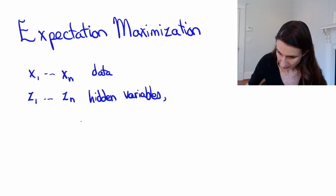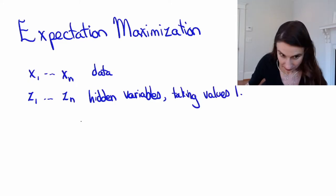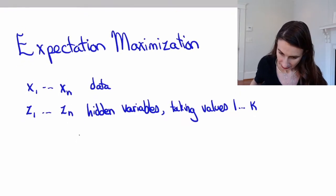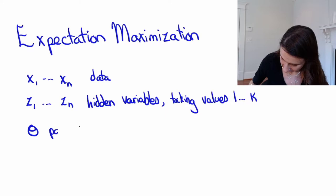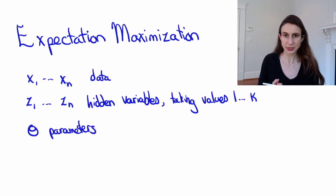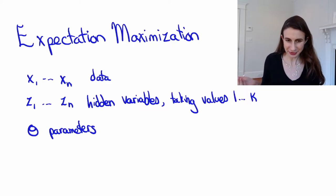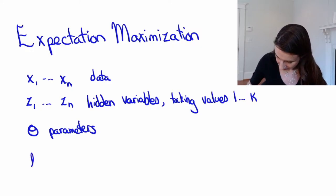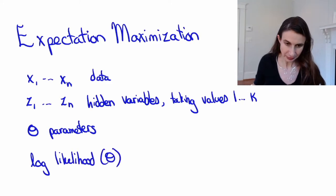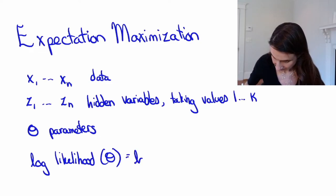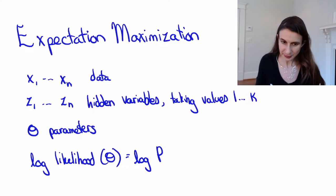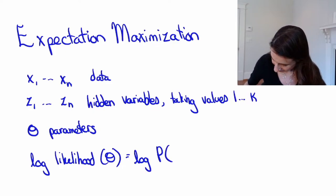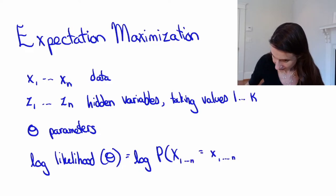These hidden variables take values 1 through k. And then we have our parameters, which are called theta. In the case of Gaussian mixture models, those parameters were the popularity of the different clusters, as well as the cluster centers and the cluster covariances.